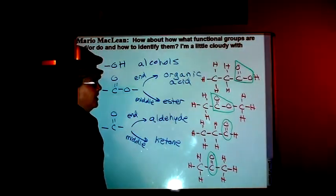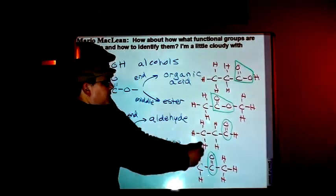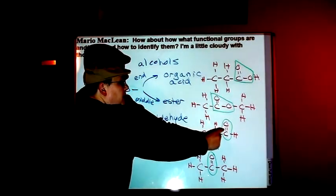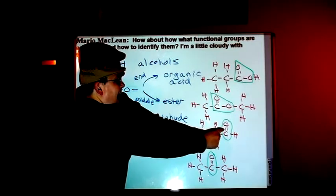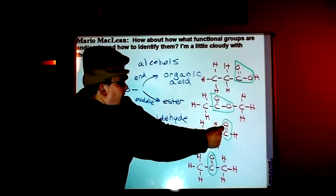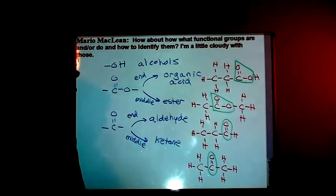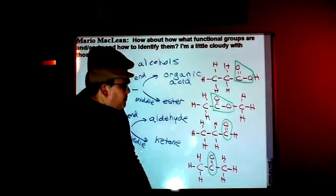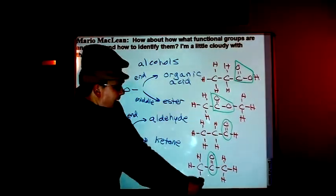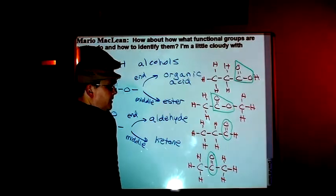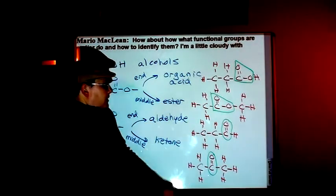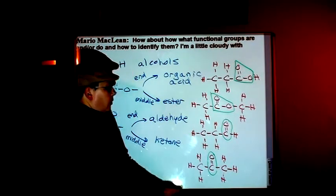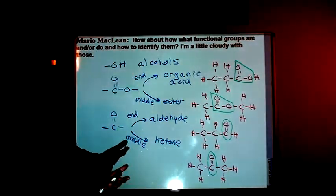For the aldehydes: three carbons — prop; single bonds — an; double-bonded oxygen on the end — al. So it's propanal. For this one, we have three carbons — prop; single bonds — an; and it's a ketone — one. So it's propanone, also known as acetone.